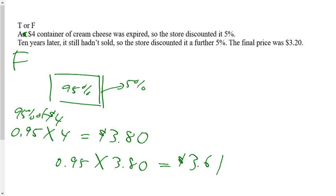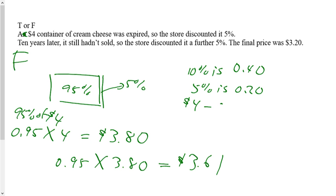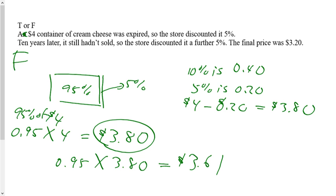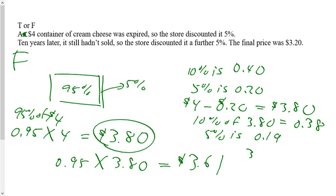Another way you could have done it: 10% of $4 is $0.40, so 5% is $0.20. $4 take away $0.20 is $3.80. Then 10% of $3.80 is $0.38, so 5% is half of that, which is $0.19. So $3.80 take away $0.19 is $3.60 — same answer, just a different method.